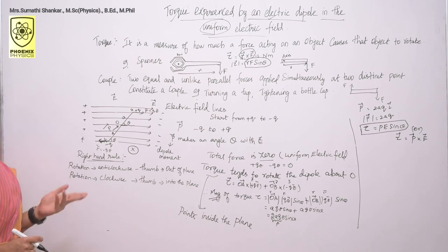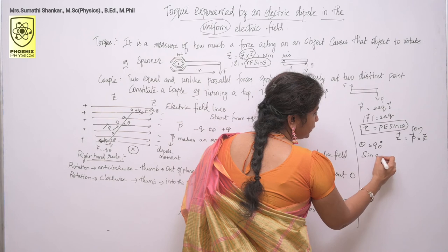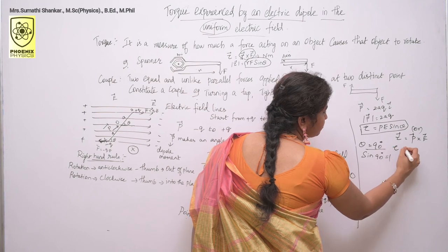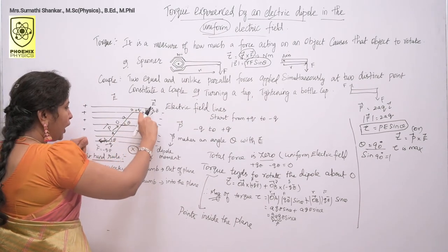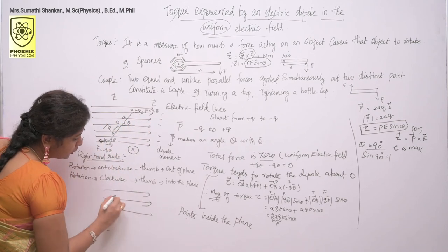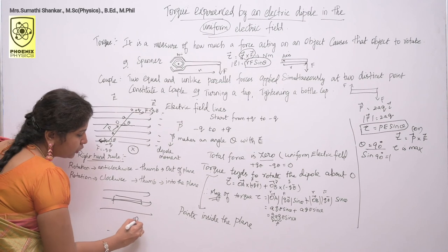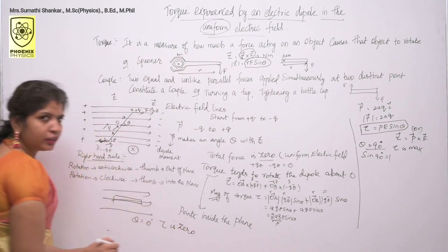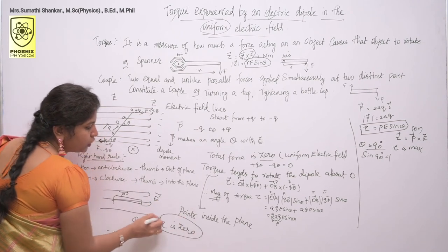When do you get maximum tau? At theta equal to 90 degrees — since sin 90 is 1, tau is maximum at theta = 90°. This torque tends to align the dipole in the direction of the field. When the dipole is already aligned in the direction of the electric field, there is no angle, so theta equals 0 degrees and tau equals zero.